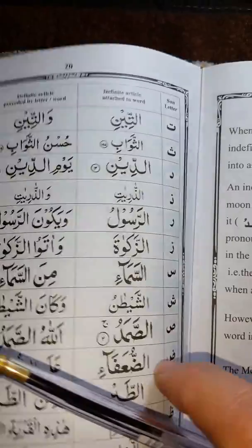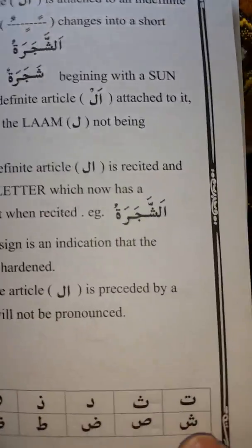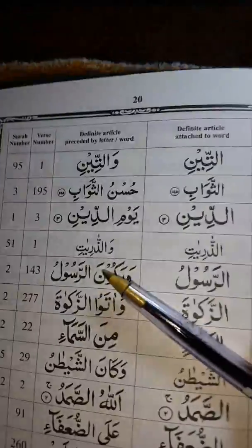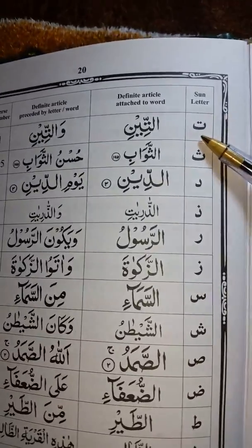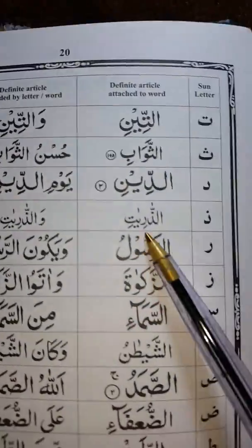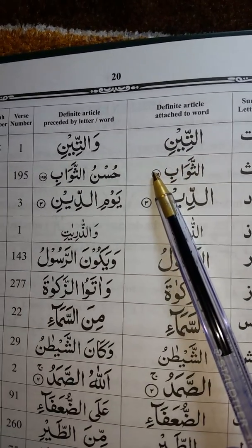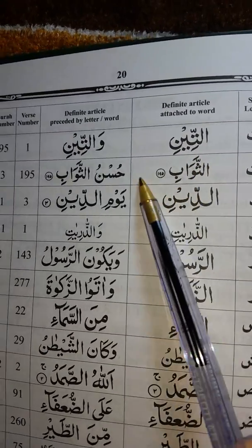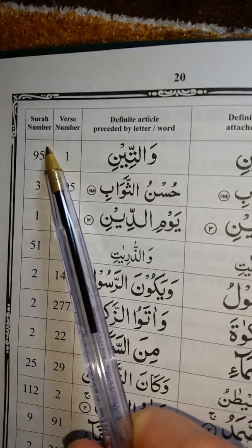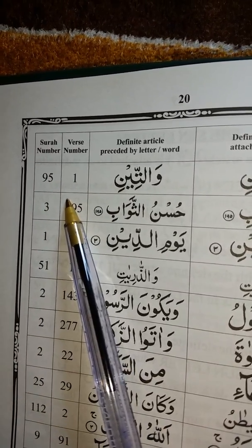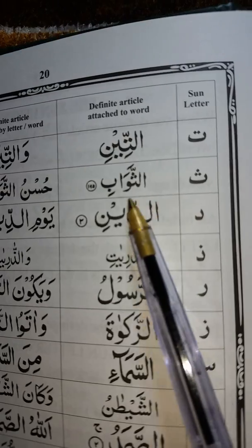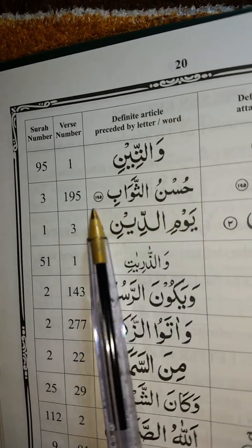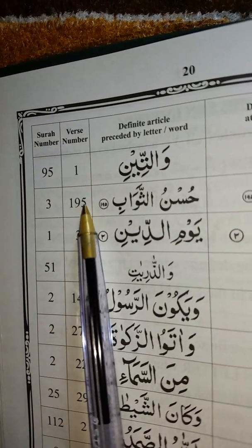As we said, Tahtas Sajaratun. We go straight to the examples. The first example is Atin — there's one Alif Lam. We read it: Atin. That's from Surah 95, Ayat 1. The next one is Sin: Husnus Sawab. That's Surah number 3, Ayat 195.